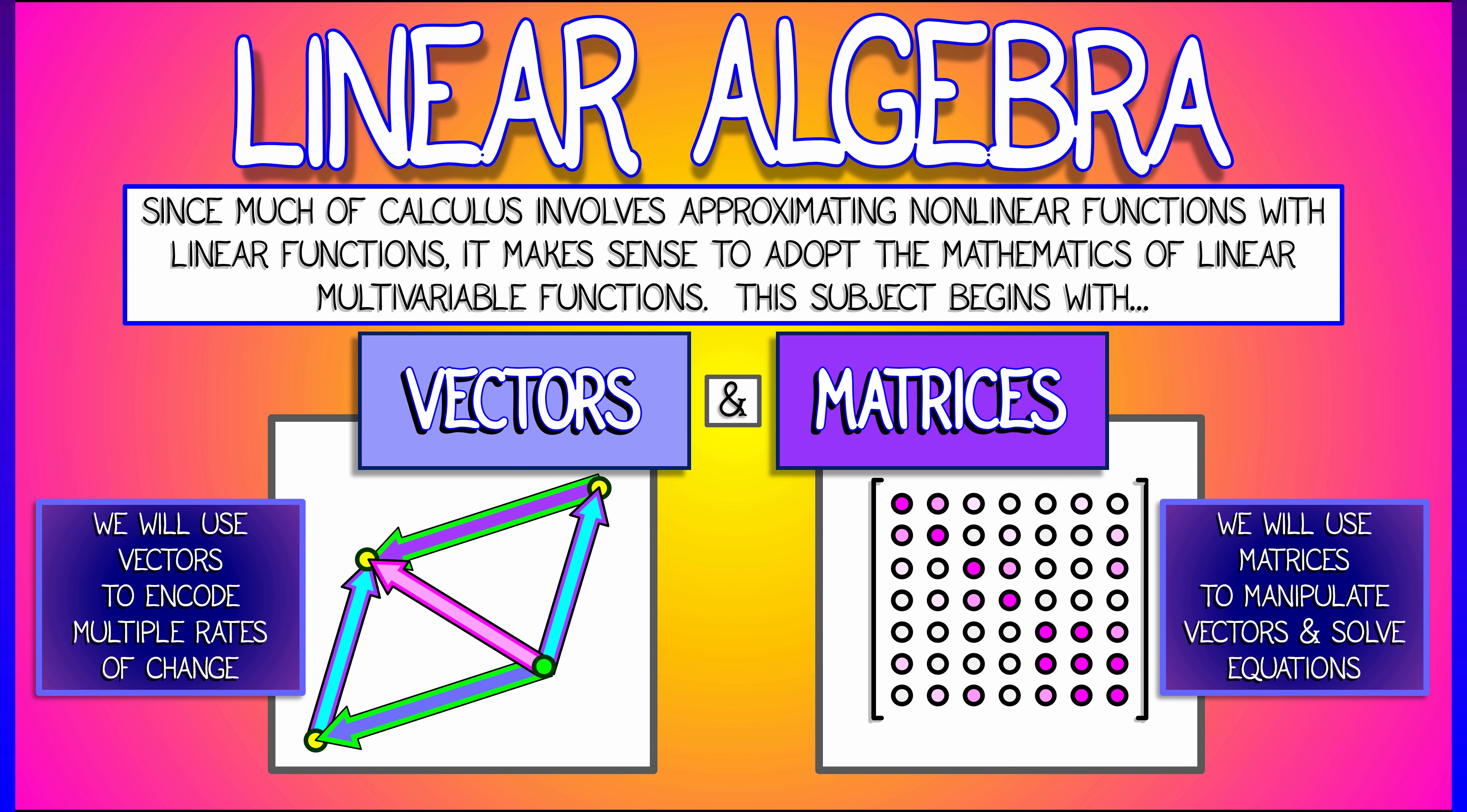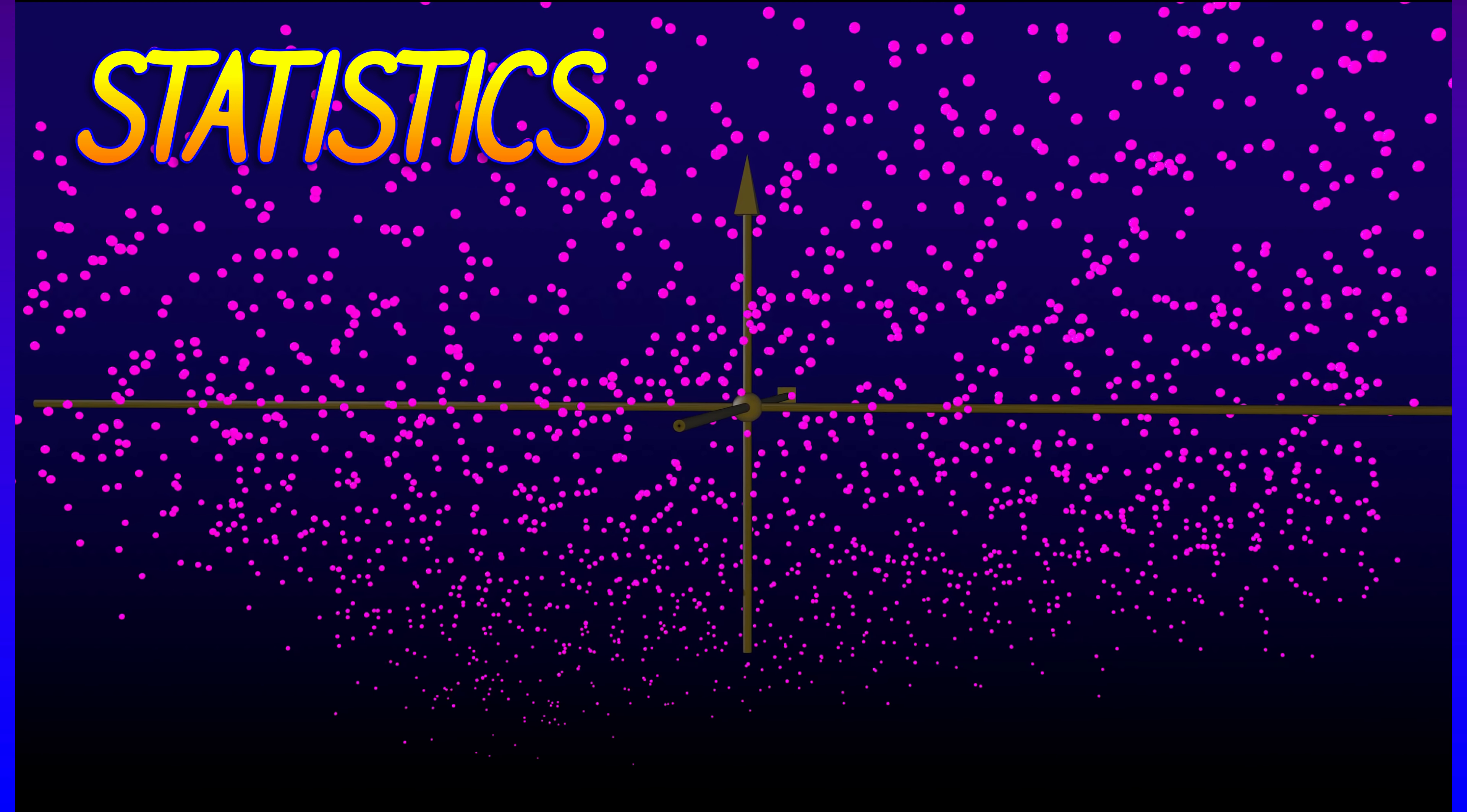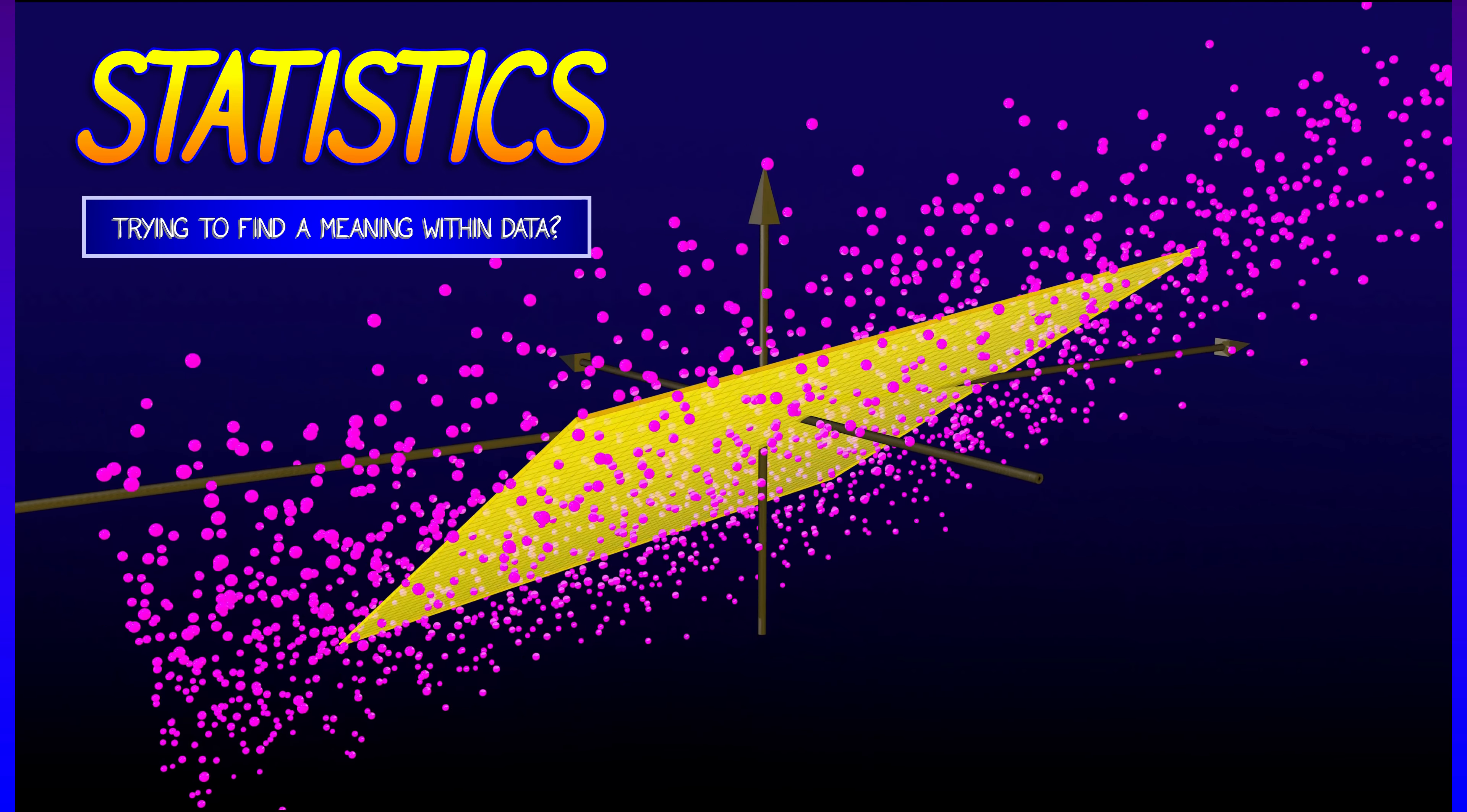We're going to see vectors all over the place in machine learning, using dot products for classifying data. And this happens not in 2D or 3D, but in very high dimensional spaces.